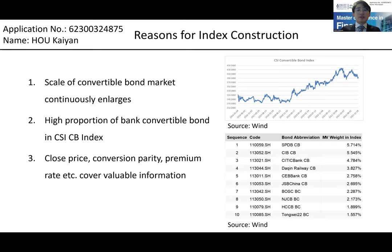Second, I'd like to illustrate the reasons for the indexes. First, the total market value of Chinese Kanbans is surging, which can be proved by the significant increase in the CSI Kanban index. Second, the majority proportion of the index is bank Kanbans — the second picture shows 8 out of the top 10 Kanbans are issued by banks. Thus, this index pattern highly relies on variations in bank Kanbans and fails to measure the whole market consisting of different industries. Third, because Kanban has both stock and bond portions, its close price covers valuable information such as stock and bond market performance.